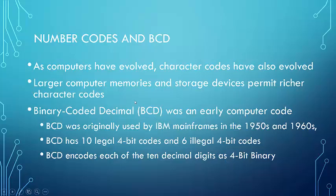The last thing I want to talk about in this unit is number codes. In comparison to positional number systems, number codes don't depend on weights, but rather encoding of some sort. The one we're going to focus on in this class is binary coded decimal, or BCD. This was an early computer code originally used by IBM mainframes in the 1950s and 60s.